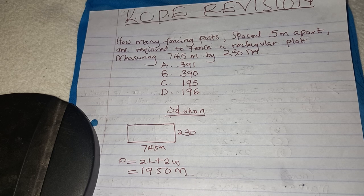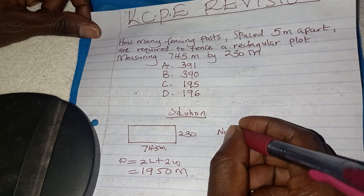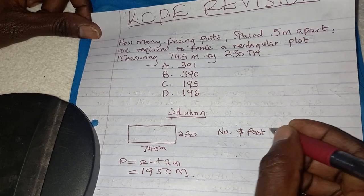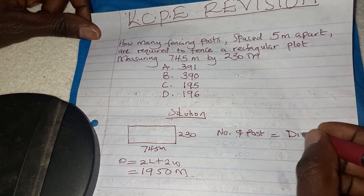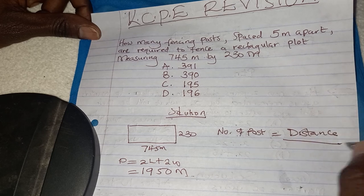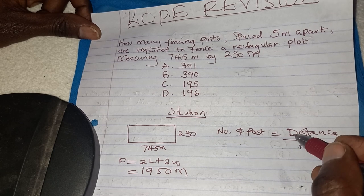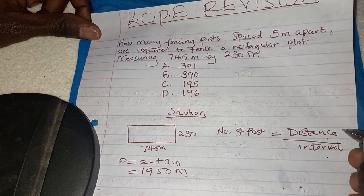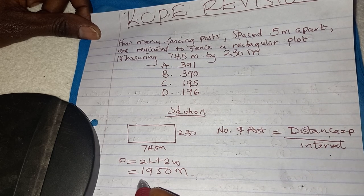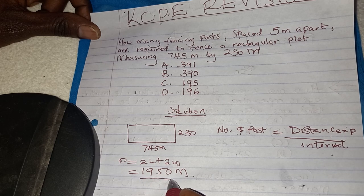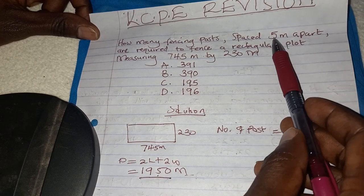After you get the perimeter of the plot, to get the number of posts, you divide distance by the interval. In this case, the distance is the same as the perimeter, which we have calculated as 1950 meters. The interval is given as 5 meters.